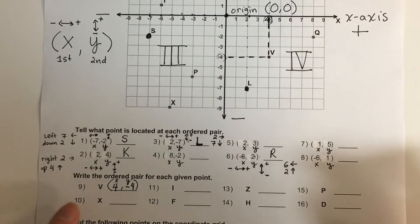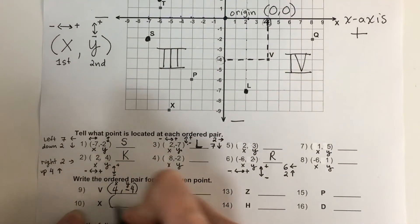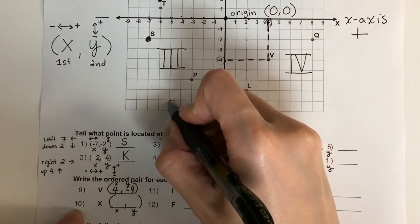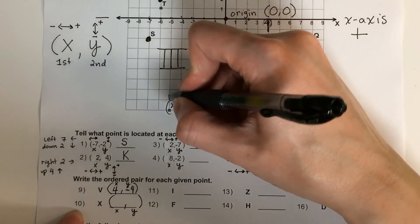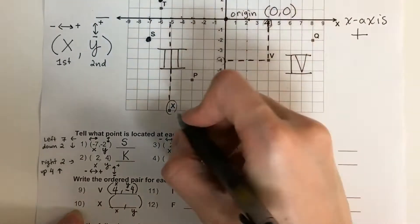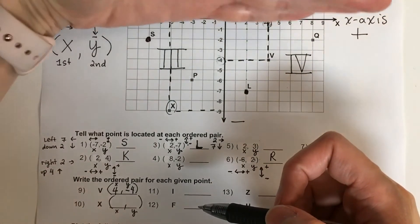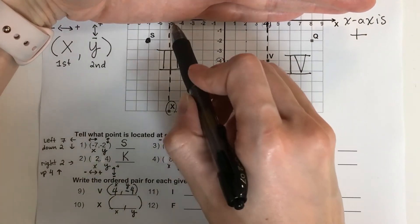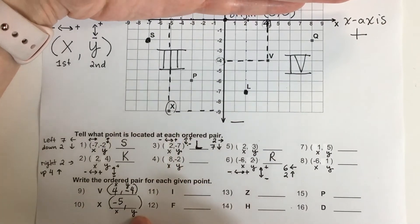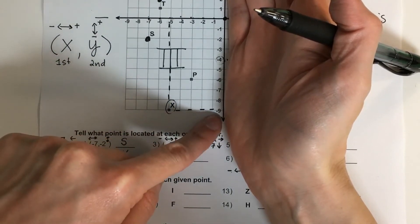Let's do number ten — point X. Here's X right here. Let's draw the lines. X on the x-axis looks like this is negative five. Now for y — what number is that? Negative nine. So the ordered pair is (-5, -9).